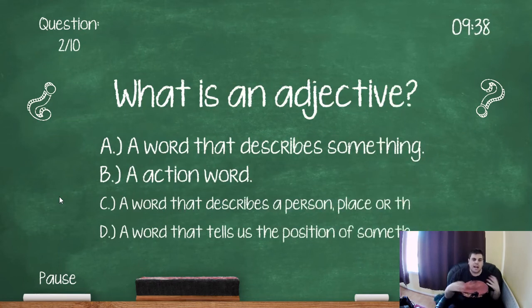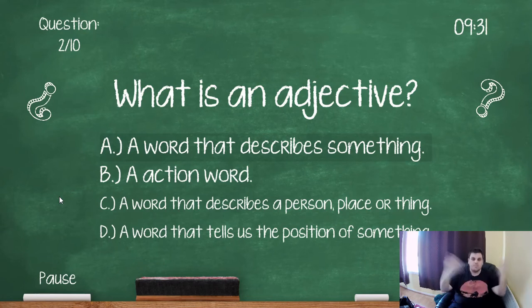What is an adjective? So an adjective is a descriptive word. So for example, I'm wearing a black top, orange top, orange sun, that sort of thing. So you're describing something. A.